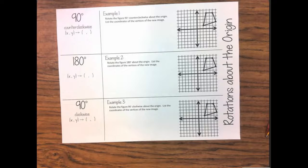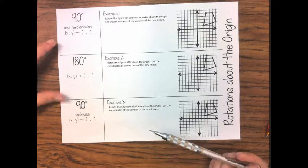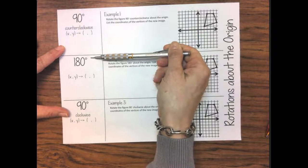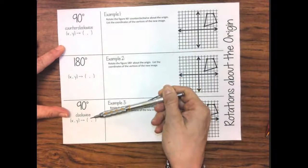Alright, welcome to your Rotations I Learn. We're going to be looking at the example of a 90 counterclockwise, a 180, and a 90 clockwise.